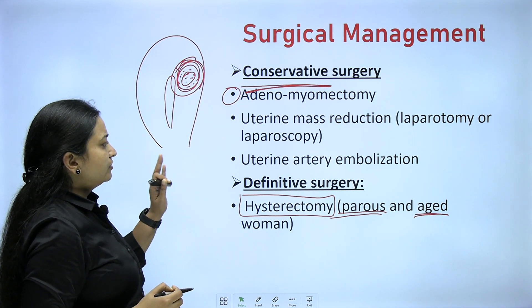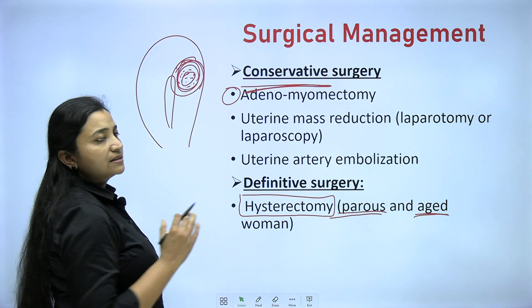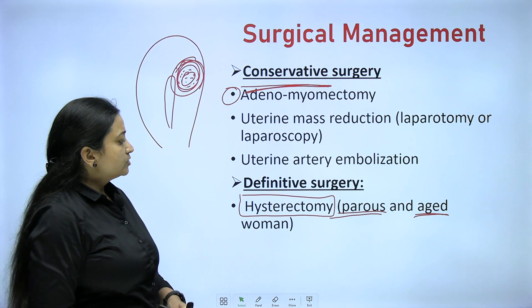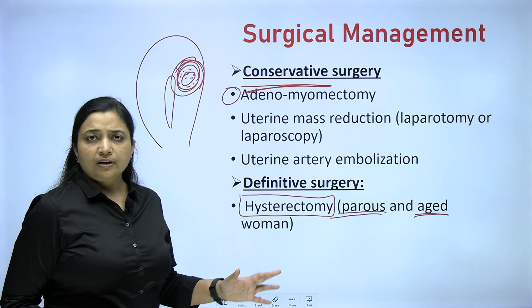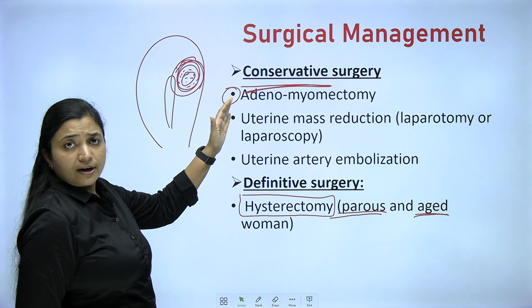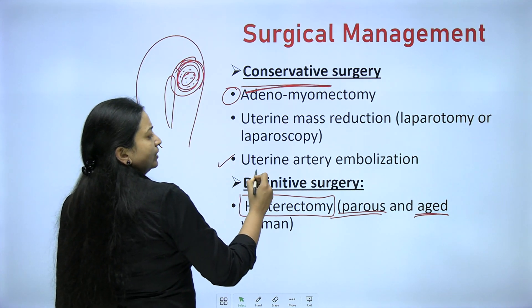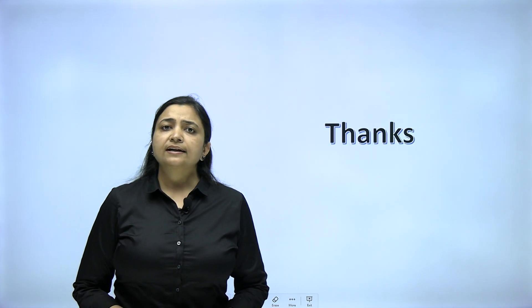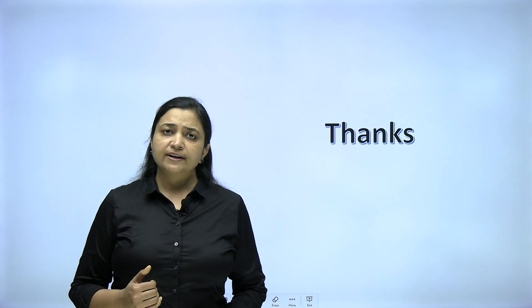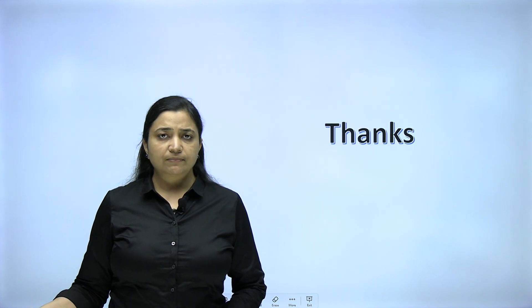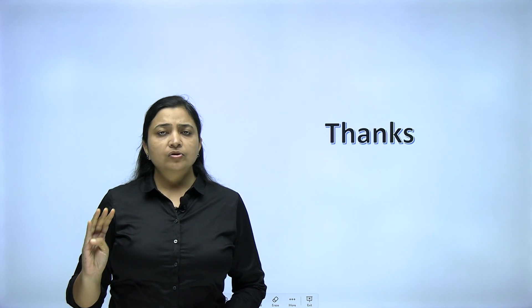Uterine mass reduction generally does not have much value now. Nowadays hysterectomy — by any method, abdominal or laparoscopic — is the treatment of choice. For conservative surgery, adenomyomectomy if it is local adenomyosis, or uterine artery embolization, works well. In conclusion, whenever a patient presents with heavy bleeding and dysmenorrhea, careful history-taking and clinical examination guide you to prescribe sonography or MRI. Hormonal therapy has no significant role in adenomyosis and the definitive treatment is surgical.